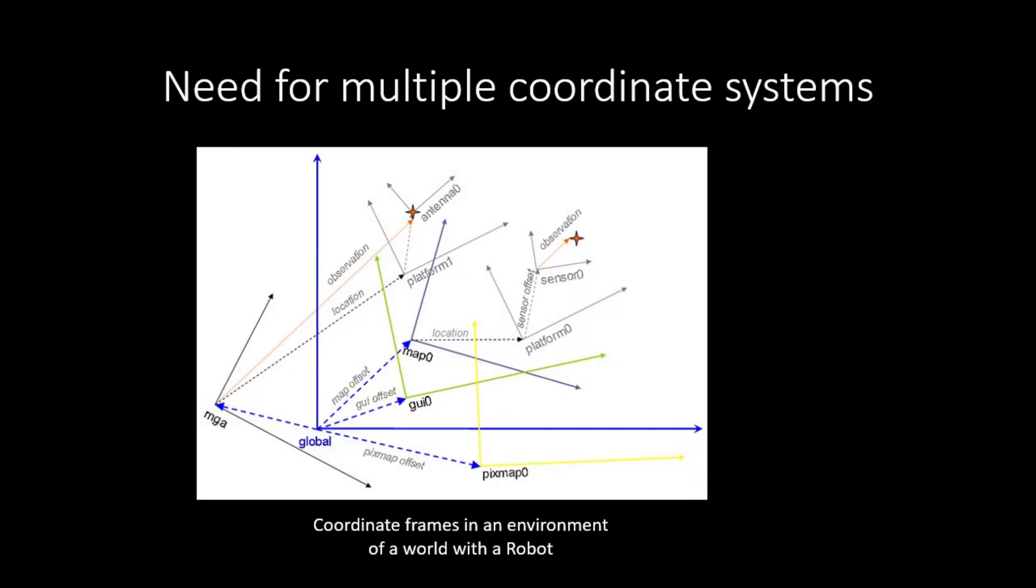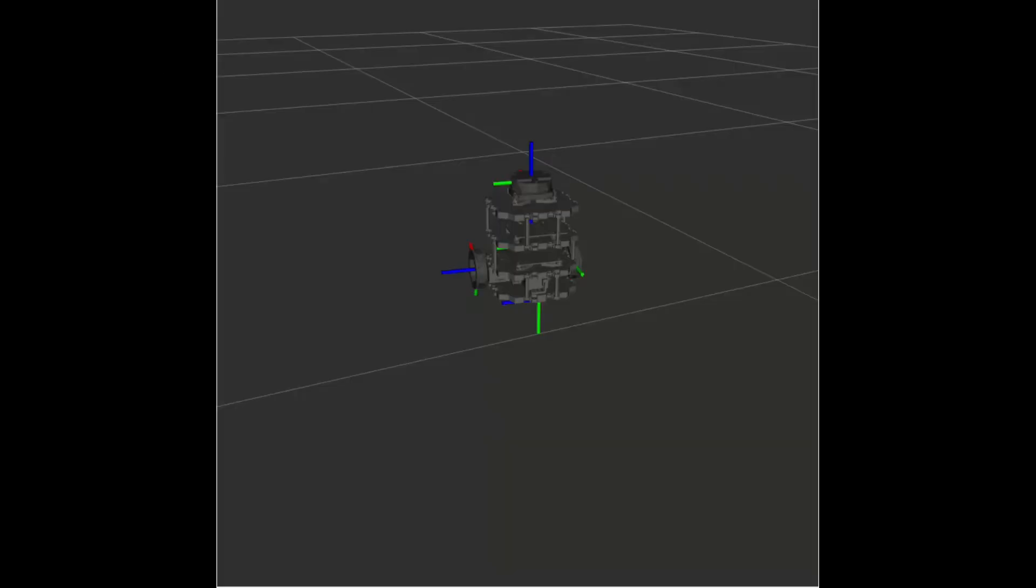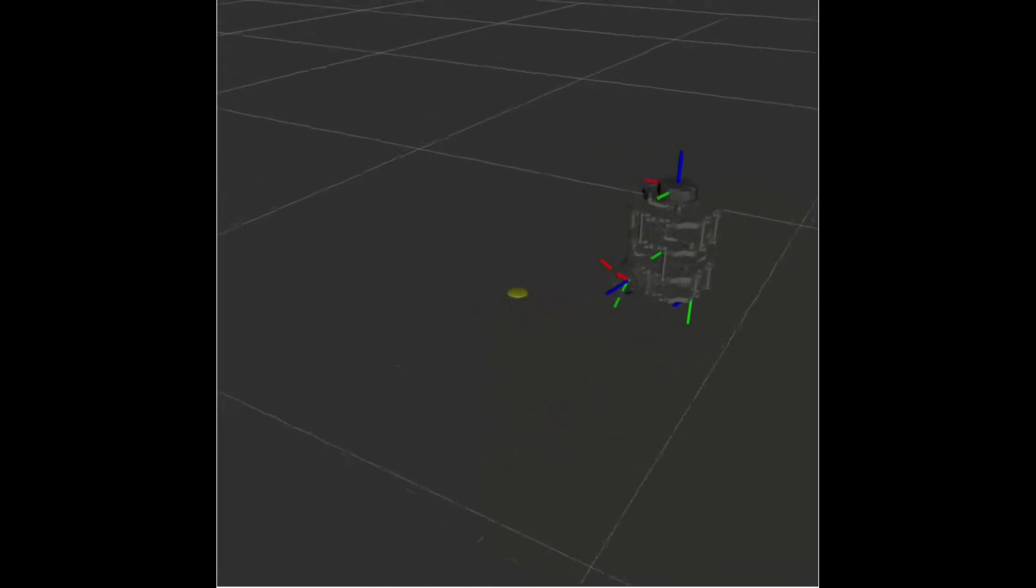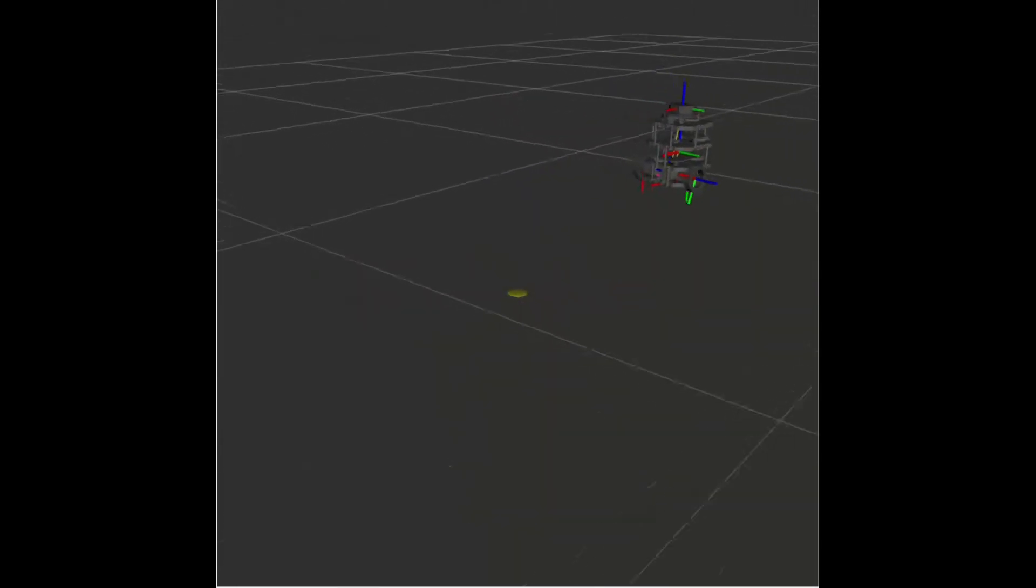For different applications, a same system can have different coordinate systems. There can also be subsystems in a system which has its own coordinate system. There can be an entire subsystem hierarchy inside a system.